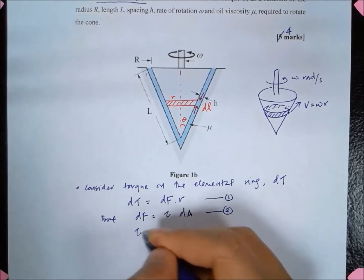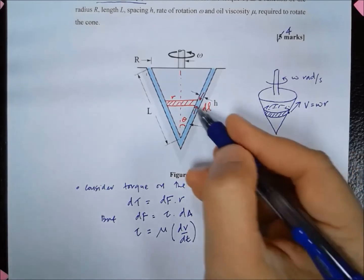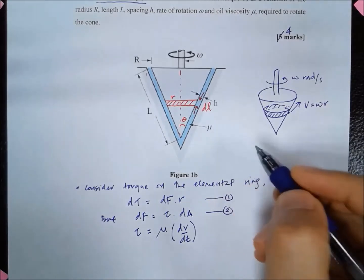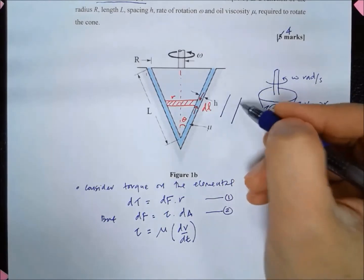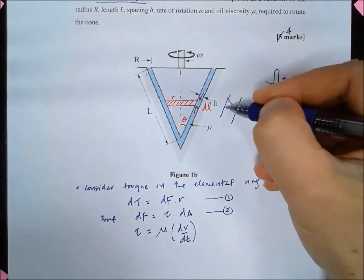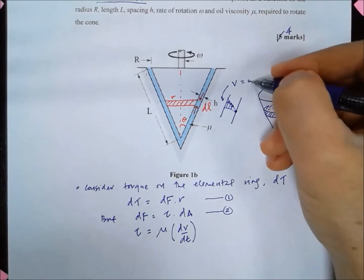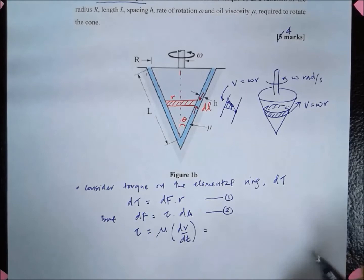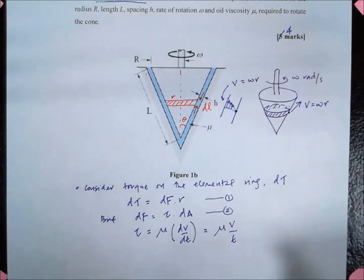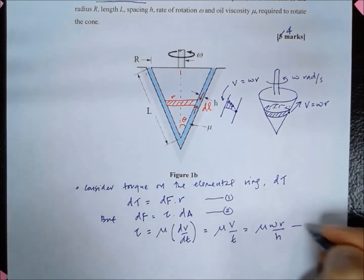We know that the shear stress is equal to mu multiplied by dv/dt. If I consider what's happening here and draw the velocity gradient, the point which is in contact with the container will have zero velocity, whereas the one in contact with the cone will have velocity v, which is equal to omega r. So this is equal to mu v over the thickness, which gives us the velocity gradient, and this is equal to mu omega r over h. Let's call that equation 3.